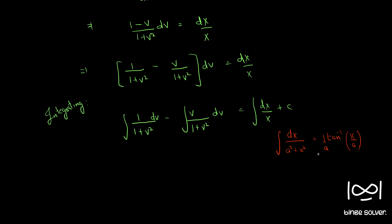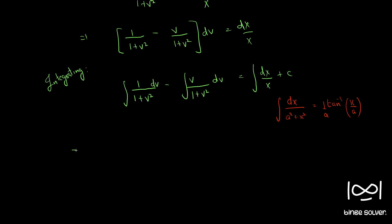Applying this formula — with a equal to 1 — we get tan⁻¹(v) minus (1/2) log(1 plus v squared) equal to log X plus c. Now we can substitute v equal to Y/X from equation 8.